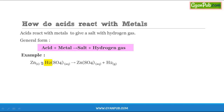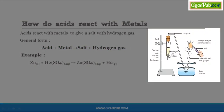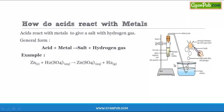The metal displaces hydrogen from the acid and combines with the remaining part — the sulfate ion — to form a salt, while the separated hydrogen is evolved as hydrogen gas. We can observe the reaction between zinc granules and sulfuric acid, where zinc sulfate salt is formed and hydrogen gas is evolved through the delivery tube. The hydrogen gas is tested by placing a flame at the tip of the delivery tube, where the flame goes off with a pop sound.